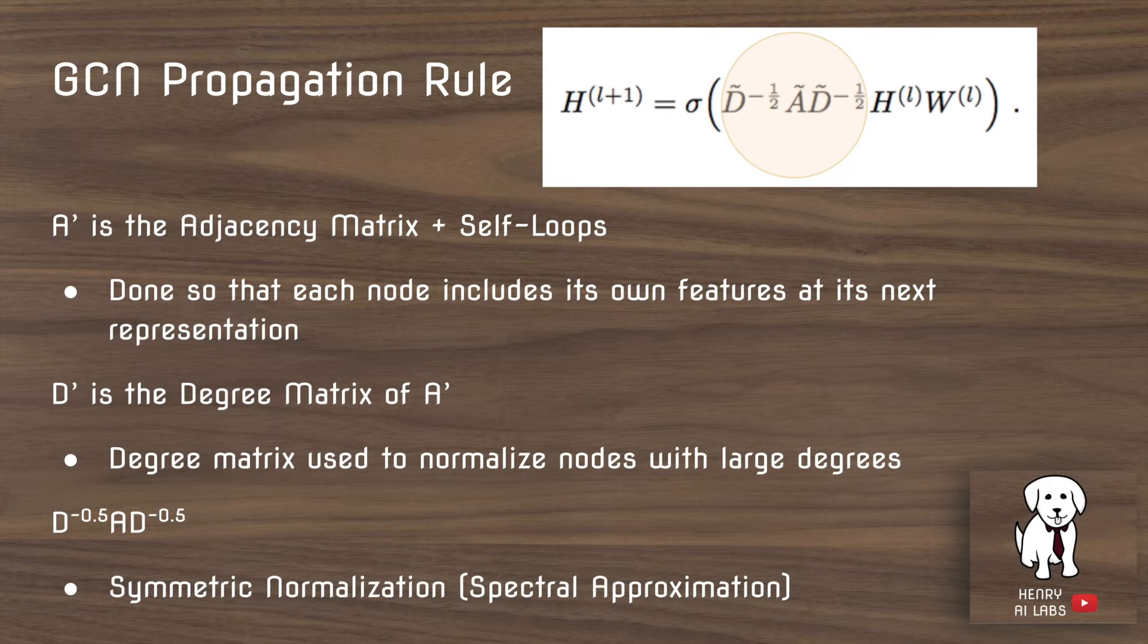D prime is the degree matrix of A prime. And this is used to normalize nodes with large degrees, because otherwise nodes that have a lot of neighbors would have a really high magnitude in their features, because every time it propagates forward, the features are being aggregated with many other nodes.